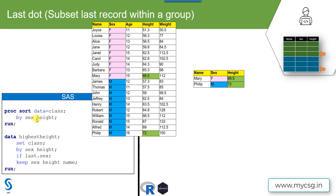In SAS, we first need to ensure that the records are sorted based on the requirement. All records of females should appear together, and within females the record with the highest height should appear at the end of that group. Similarly, within males the record with the highest height should appear at the end. For that we use proc sort and specify the variables sex and height on the by statement. Then we use a data step to create the last. concept.